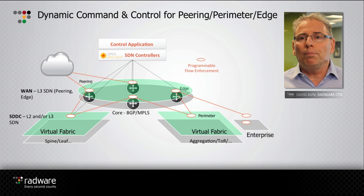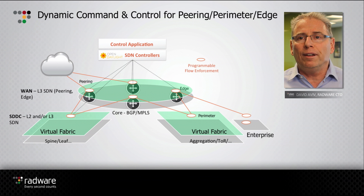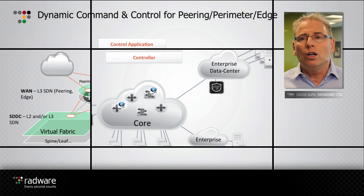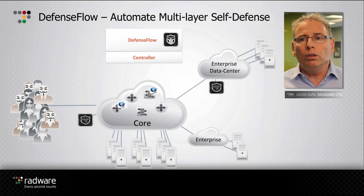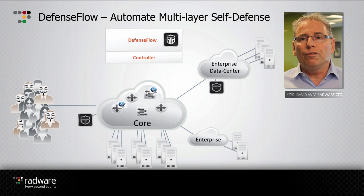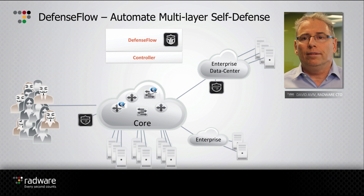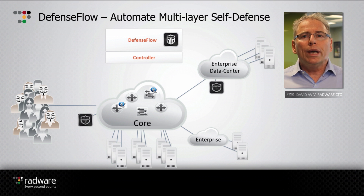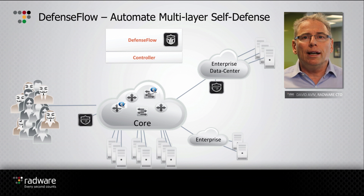That kind of control application can provide dynamic enforcement for the network. Radware developed in the last two years a new generation of SDN application. The first one is called the Defense Flow. The Defense Flow's goal is to utilize the network APIs in order to enforce cyber state into the network when we detect an attack.